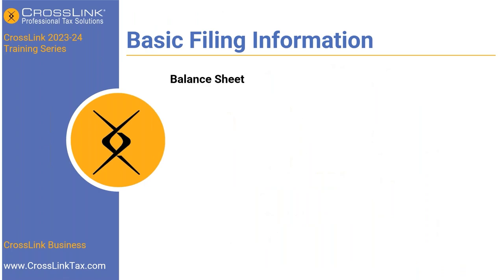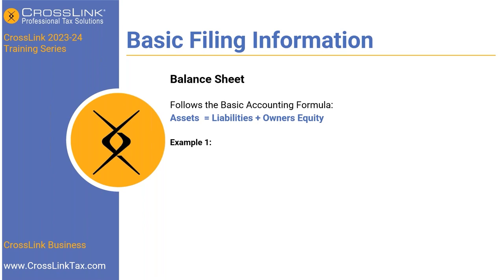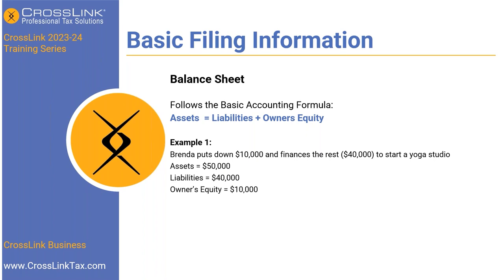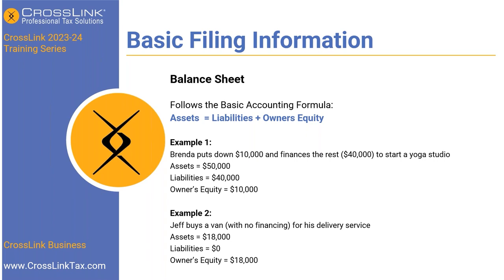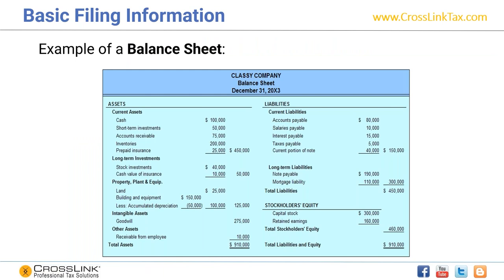Balance sheets follow the basic accounting formula: assets equal liabilities plus owner's equity. For example, if Brenda puts down $10,000 and finances the remaining $40,000 to start her yoga studio, total assets are $50,000, liabilities are $40,000, and equity is $10,000. In another example, if Jeff buys a van for $18,000 with no financing, assets equal $18,000, no liabilities, and owner's equity equals $18,000.